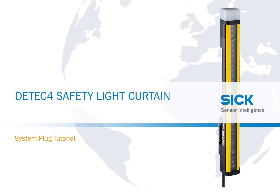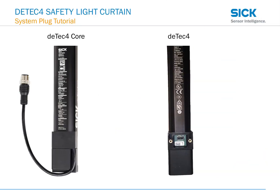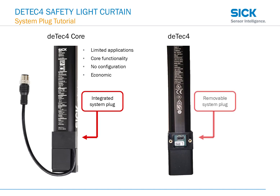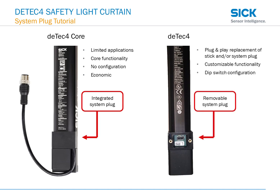Welcome to this DTEK4 safety light current tutorial. Today I'll be discussing the system plugs. The DTEK4 core has an integrated system plug, whereas the DTEK4 has a removable system plug. This allows for plug-and-play replacement, customizable functionality, and DIP switch configuration.